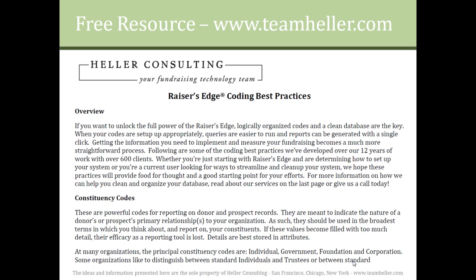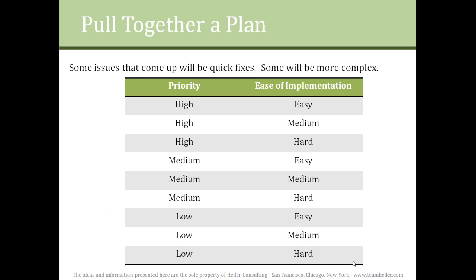By this point, you might have a pretty long and daunting list of issues and goals, but that is where the third step of the annual review comes in. For each item on your list, rate it according to two criteria: ease of implementation based on your in-house resources, and priority. The combination of these two will point you in the right direction in your cleanup and preparation efforts.